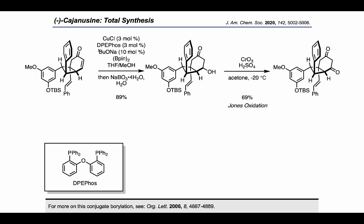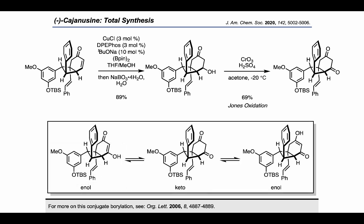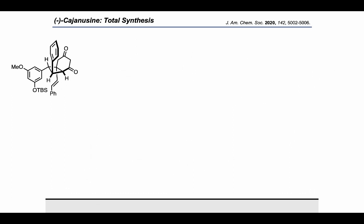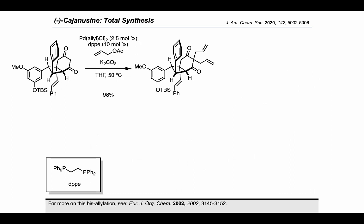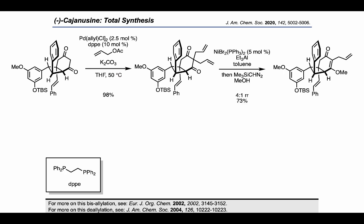This dione existed as a tautomeric mixture of a keto form as well as two enol forms. Although the authors had trouble installing a single allyl group, they were able to carry out a bisallylation with palladium and allyl acetate, followed by a nickel-catalyzed monodeallylation and an O-methylation that had to regioselectively discriminate between two potential oxygen nucleophiles.